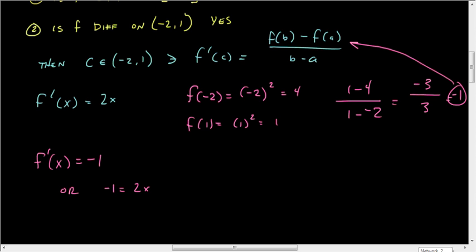Or when does -1 equal 2x? So if we do that, then we just divide by 2 and we get -1/2 is equal to x. And so the value at which the derivative is -1 is x equals to -1/2.